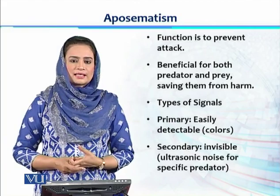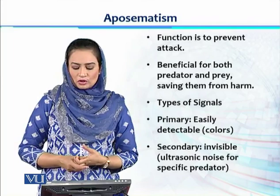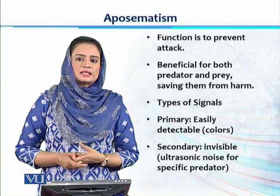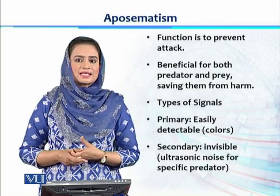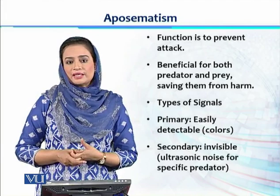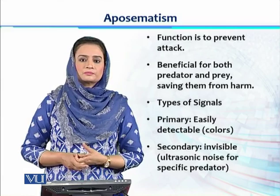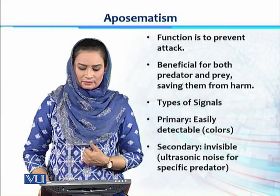Secondary signals are invisible because they could be in the form of ultrasonic noises. Only a specific group or species of predators can identify these signals. For example, with ultrasonic noises, only bats can detect the warning signal, not other predators. So this is a kind of invisible or comparatively difficult-to-detect type of warning signal.